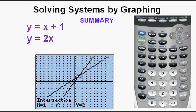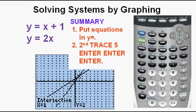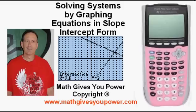Now a summary. First, put the equations into the function editor by going to y equals and entering the equations. Then find the intersection by pressing second, trace, 5, enter, enter, enter. Be sure after you press each button to allow time for the calculator to do everything it needs to do — it will go quickly, but if you press them too fast you may get an error message and have your calculator frozen. This has been solving systems by graphing equations in slope-intercept form. Thanks for viewing.